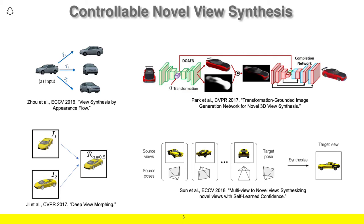To motivate this work, consider recent efforts in the field of controllable novel view synthesis. Much progress has been made in synthesizing novel views of real scenes or for specific objects. One of the key design choices for such works is how to parameterize the desired viewpoint transformation. You can learn a transformation and sample from an input image, attach a transformation parameter in the middle of an encoder-decoder framework, learn to interpolate between two input images, or use source and target poses as input to the networks. Each of these yields reasonable novel view synthesis results, but each of these choices fundamentally limits the application of these networks to other use cases.